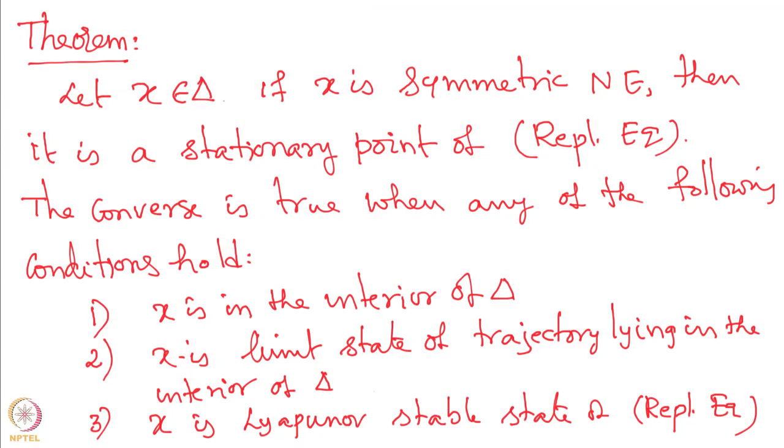To summarize: every symmetric Nash equilibrium is a stationary point of the replicator equation. However, a stationary point of the replicator equation need not be a symmetric Nash equilibrium — it is a symmetric Nash equilibrium under the three stated conditions: if X is an interior point of delta, if X is the limit state of a trajectory lying in the interior of delta, or if X is a Lyapunov stable state. This theorem characterizes the relationship between stationary points of the replicator equation and symmetric Nash equilibria.